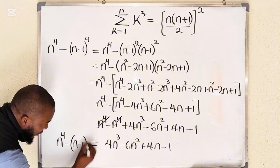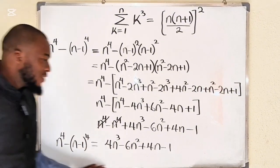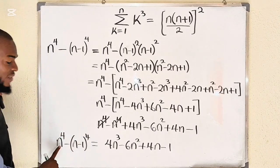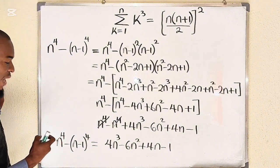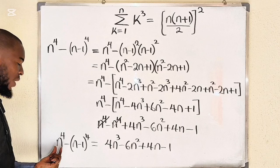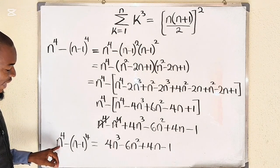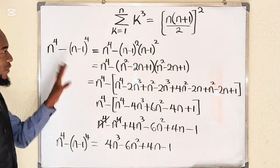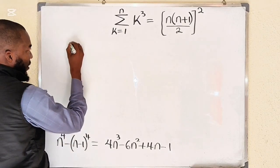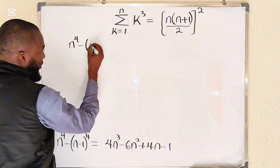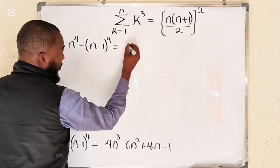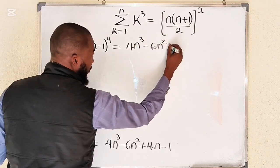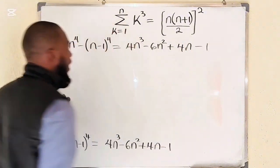So this is the expansion of n to the power of 4 minus (n minus 1) to the power of 4, which equals 4n cubed minus 6n squared plus 4n minus 1. Next, we are going to keep adding a series of this expression. We want the expansion for numbers less than n by 1, so we replace n with n minus 1, then keep on reducing n until we get to 1. So we have: n to the power of 4 minus (n minus 1) to the power of 4 equals 4n cubed minus 6n squared plus 4n minus 1.